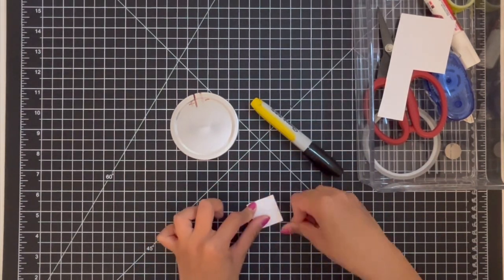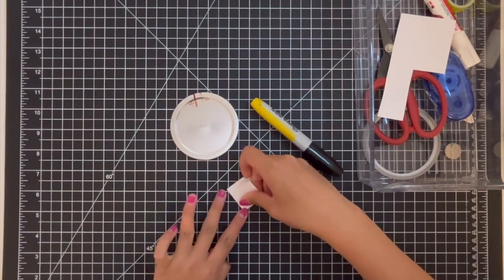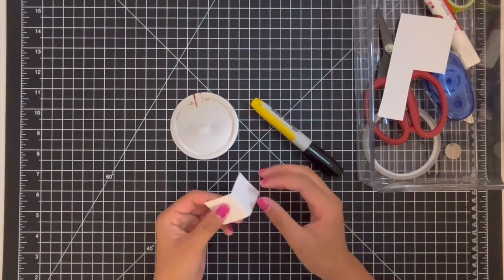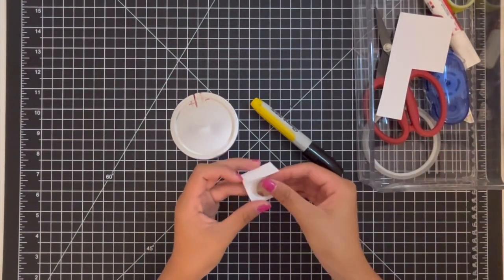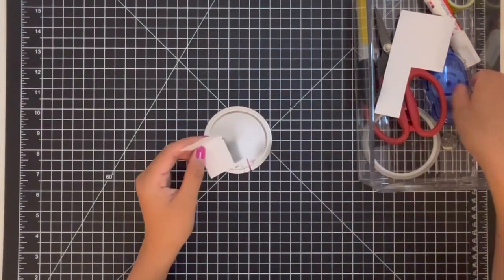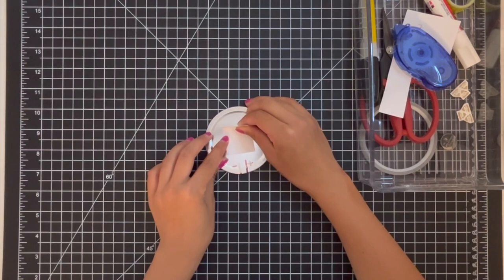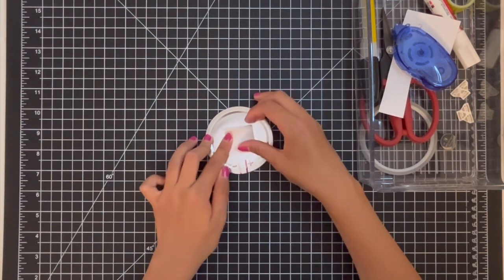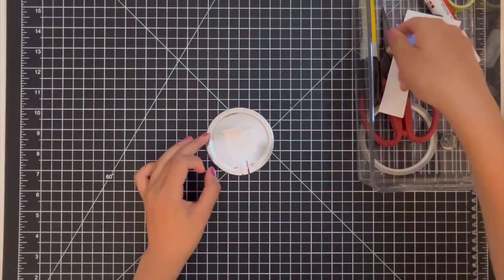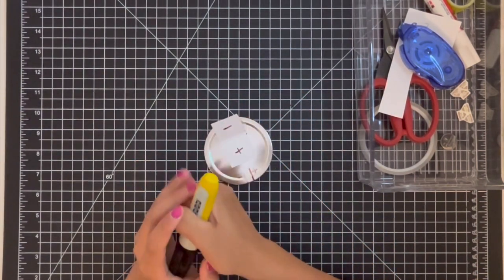Now before we finish drawing the circuit, we're going to make a battery housing. Cut out a rectangular piece of cardstock and fold it twice to create a bookcase shape to make sure that the battery can fit inside comfortably. Now glue it onto the cap so that it opens towards where the copper tape is coming from. Label the flat side with a plus and the flap with a minus. Now we can finish drawing the paths of the copper tape to the battery.